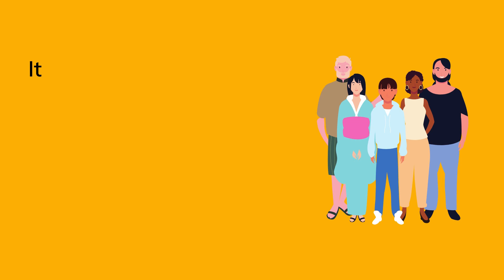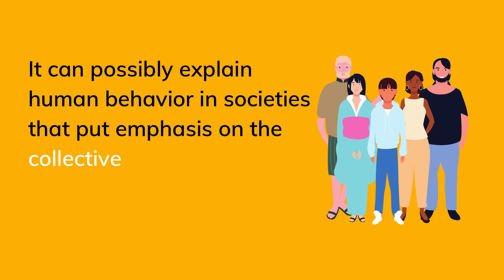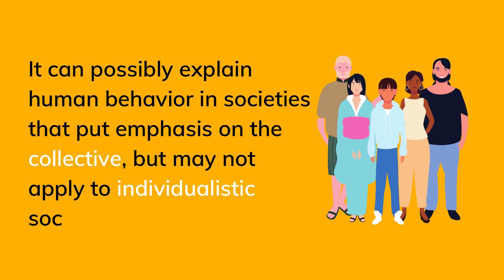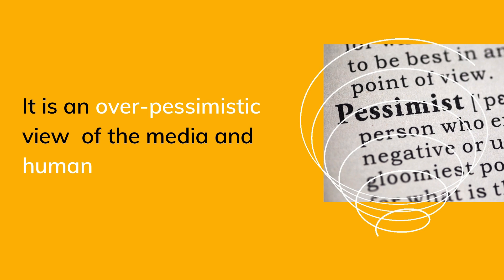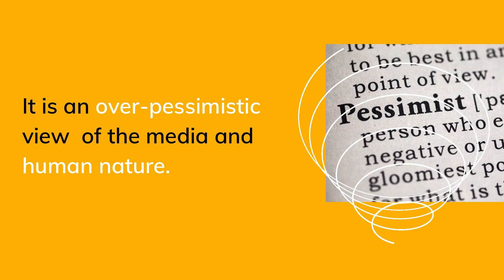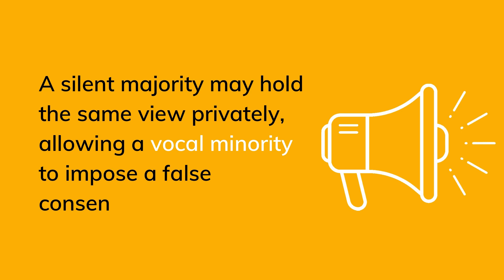Third, the Spiral of Silence can possibly be explained in collective societies like Asian societies where societal norms are stronger, but may not easily apply to individualistic societies like American and Western European ones. Fourth, many regard the theory as an overly pessimistic view of media and human nature. Finally, a silent majority may hold the same view privately, allowing a vocal minority to impose a false consensus.